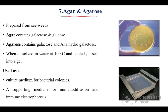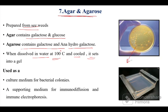Another type of heteropolysaccharide not present in human beings is agar or agarose, which is prepared from seaweeds. Agar contains galactose and glucose, while agarose contains galactose and anhydrogalactose. When dissolved in water at 100°C and cooled, agar sets into a gel used as a culture medium for bacterial colonies and as a supporting medium for immunoelectrophoresis and diffusion.